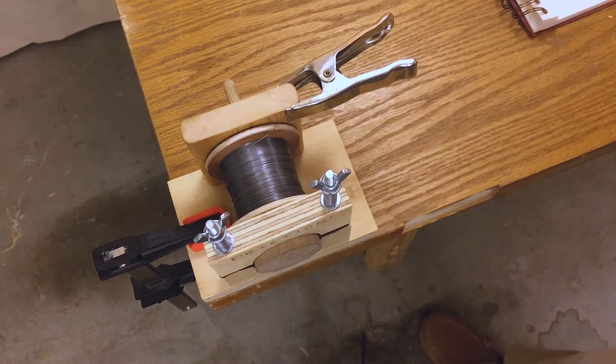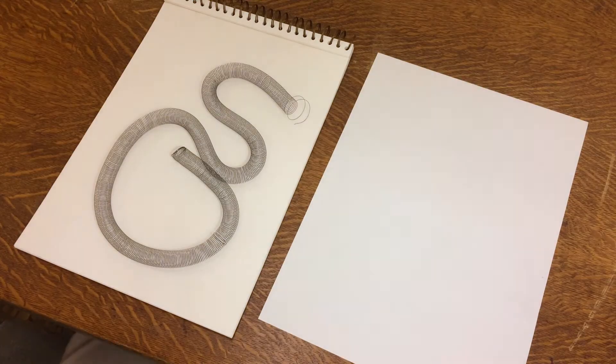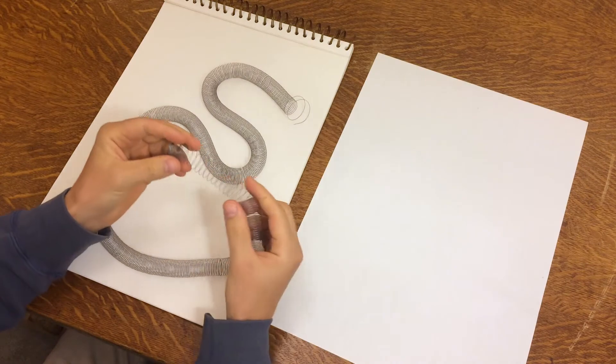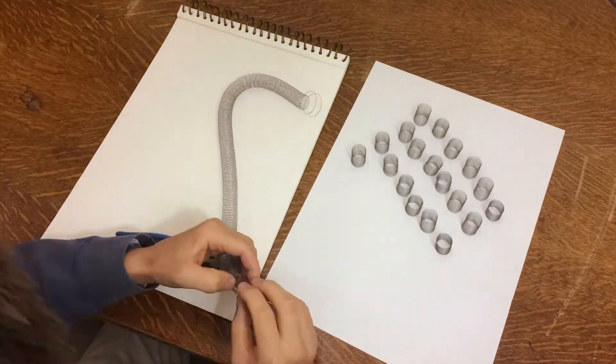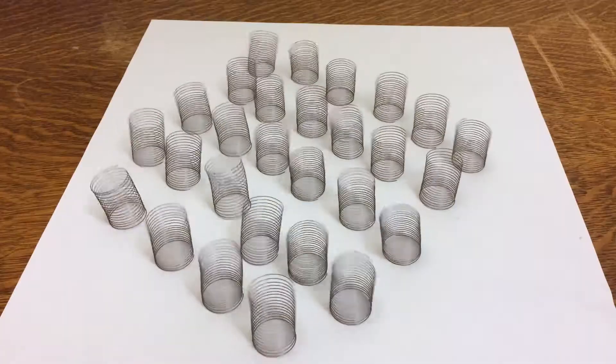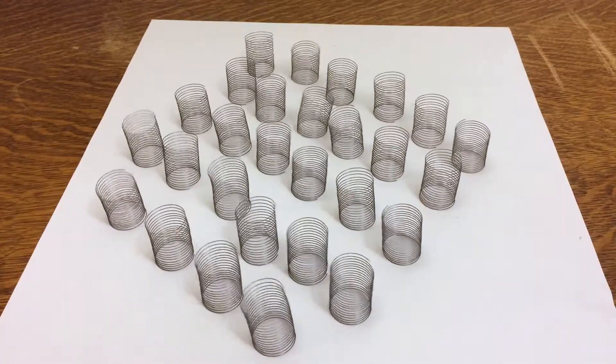Thanks, friction spool. Now I'm going to cut it up. I think that about 16 turns is right. Now, I've got all 24 springs cut with a few extras.